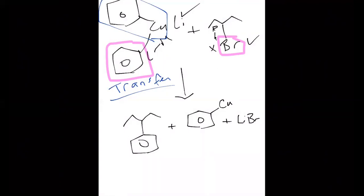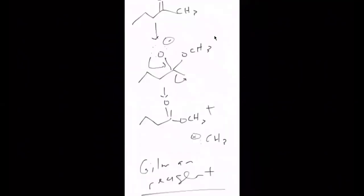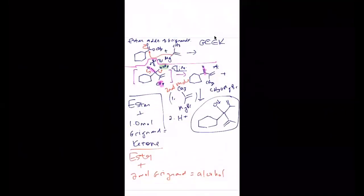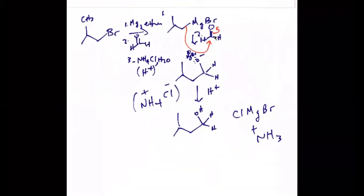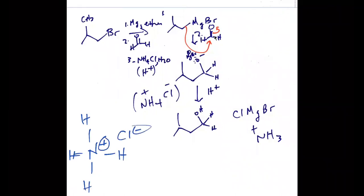One of the questions from the handout — the reagent was NH4Cl, H2O. Does that just refer to a hydrogen being donated? Yes — ammonium chloride is just a source of H+. It looks like this: four hydrogens, nitrogen is positive, chlorine is there as a salt. It's just going to donate H+, and it's a solid so the water is just to dissolve it.